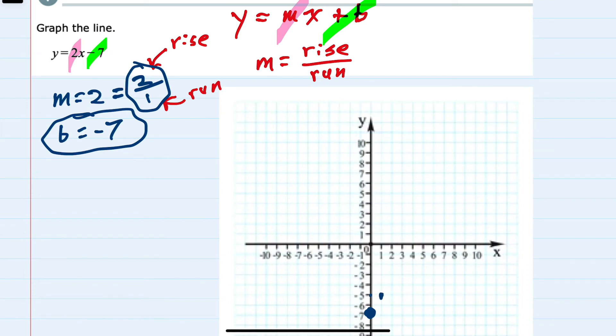And we could continue from each point to go up 2 over 1. And we'll see that those form a straight line. So this is the graph of y equals 2x minus 7.